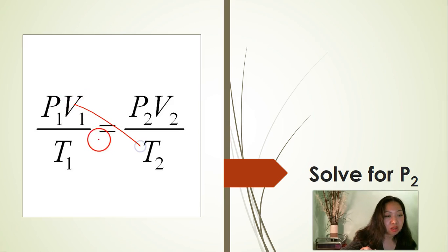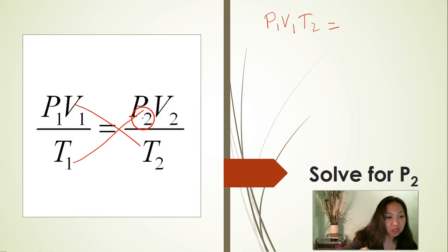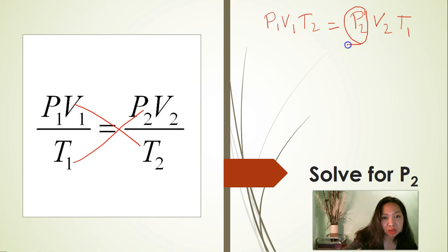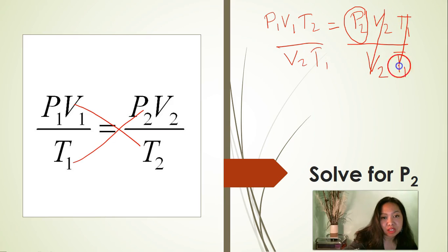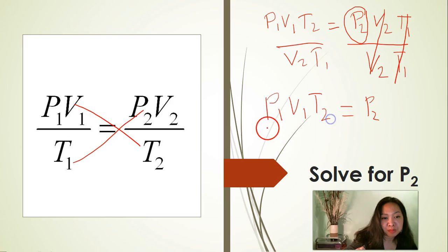Now solve for P2. First step: cross multiply so that we get rid of the denominator. P1 times V1 times T2 is equal to P2 times V2 times T1. We are looking for P2, so isolate P2 by dividing both sides of the equation by V2 times T1. Cancel V2, cancel T1. That leaves us with the formula for the final pressure: P1 times V1 times T2 over V2 times T1.